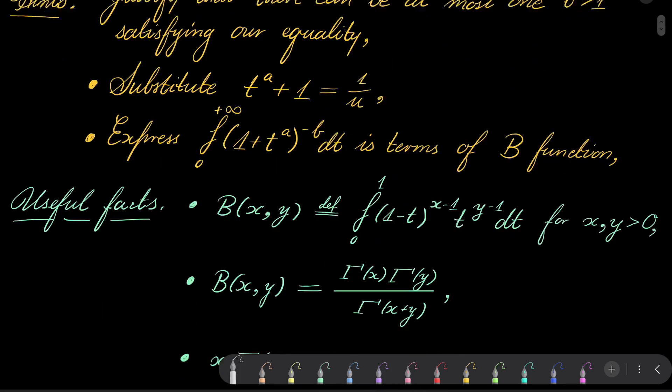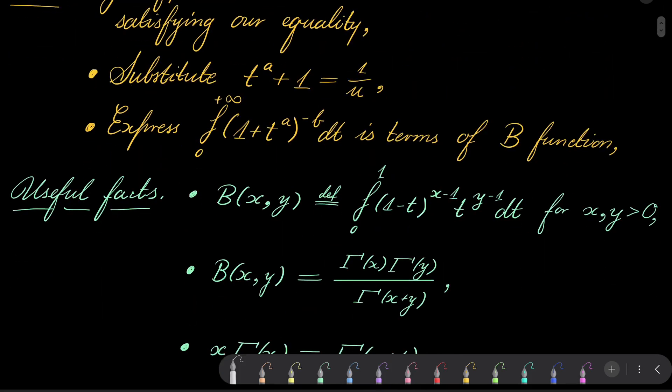What is the beta function? Well, it takes two arguments, x and y, and it's by definition the integral from 0 to 1 of (1 minus t) to the power x minus 1, times t to the power y minus 1, dt.